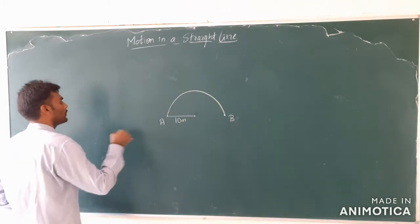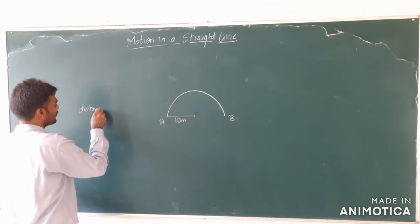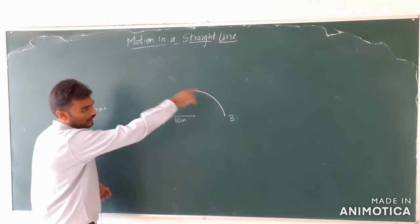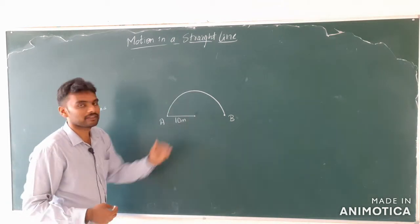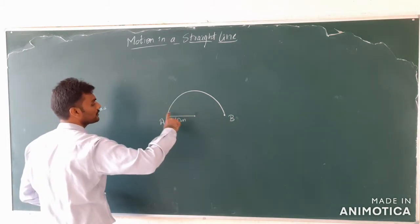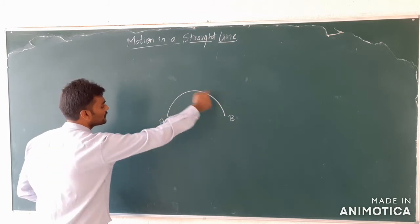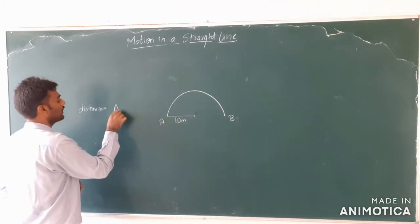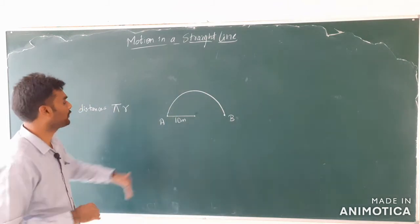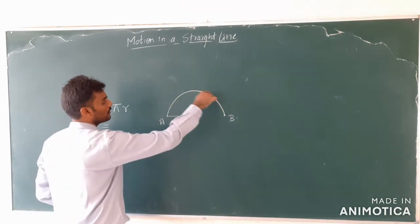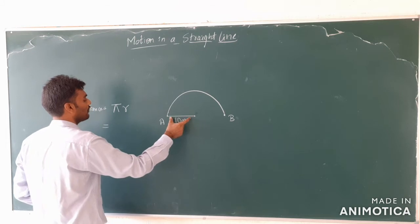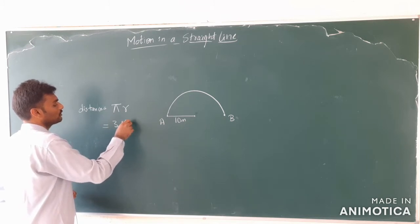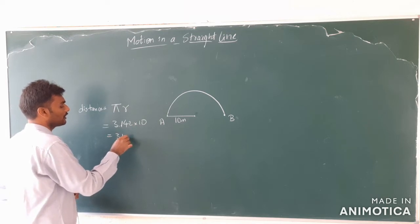So what is the distance for this example? Since it is a semicircle, half of the circumference is the length of this path. The complete circumference is 2πr, and here it is only half of the circumference, so the distance is πr. The radius of the semicircle is 10 meters, so it is 3.142 × 10, which is 31.42 meters.